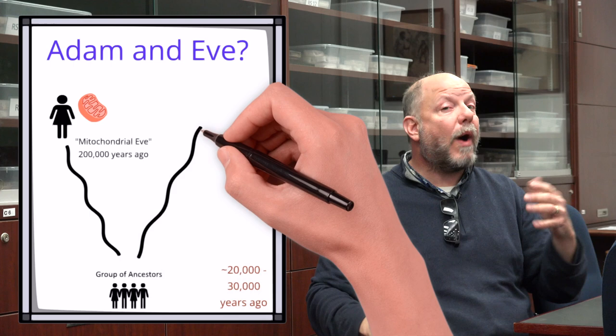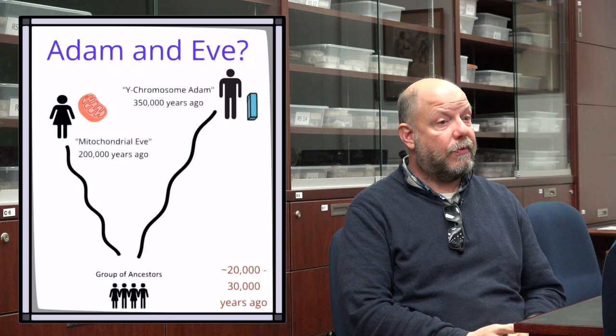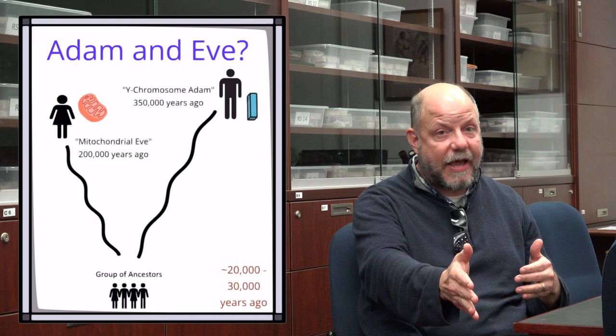Y-chromosome Adam exists as well. The Y-chromosomes all trace back to a common man. That man lived more than 350,000 years ago. So Adam in that sense, the Y-chromosome Adam lived maybe 150,000 years before Eve, the mitochondrial Eve. And that's uniquely our female and male inheritance through genealogy.